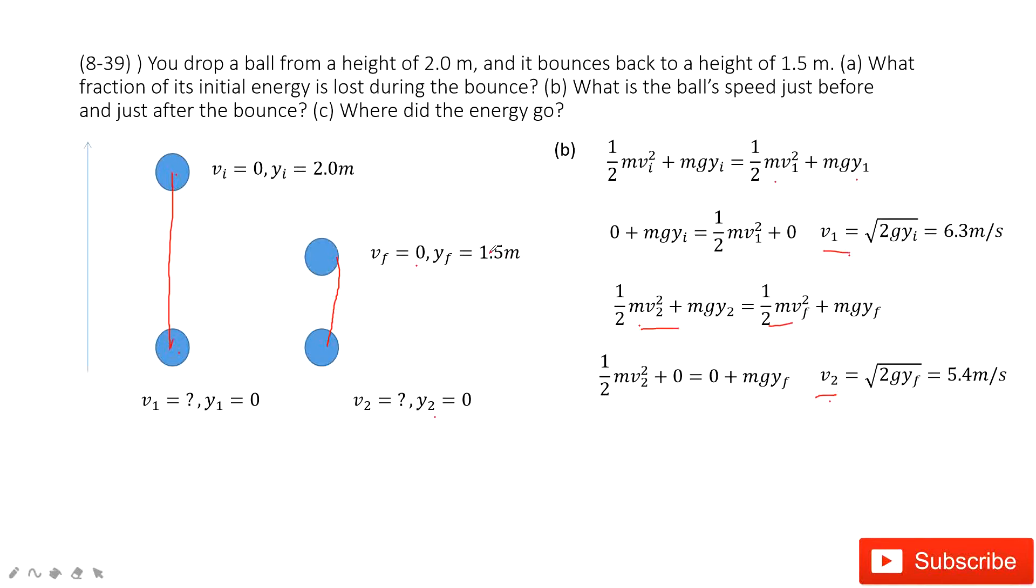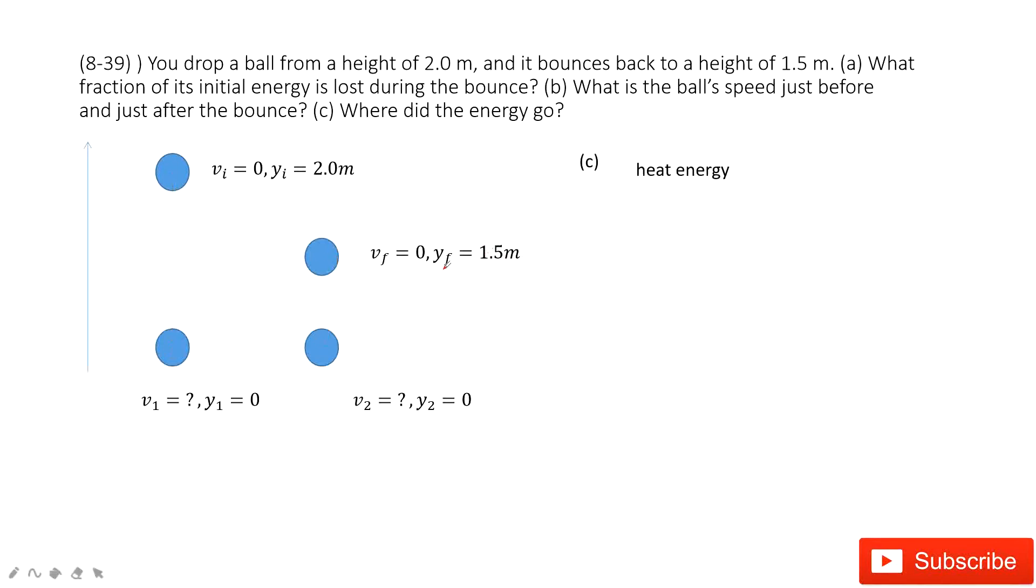Where did the energy go? The energy is converted to heat energy because there is air resistance. Air resistance is like friction doing work, making the energy convert to thermal energy. So this energy is just converted to heat energy. Thank you.